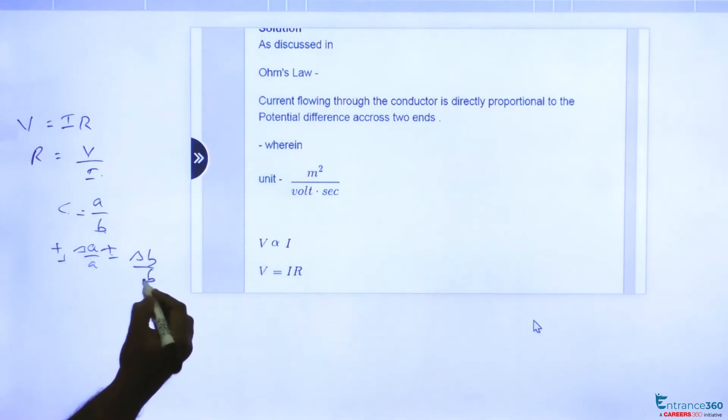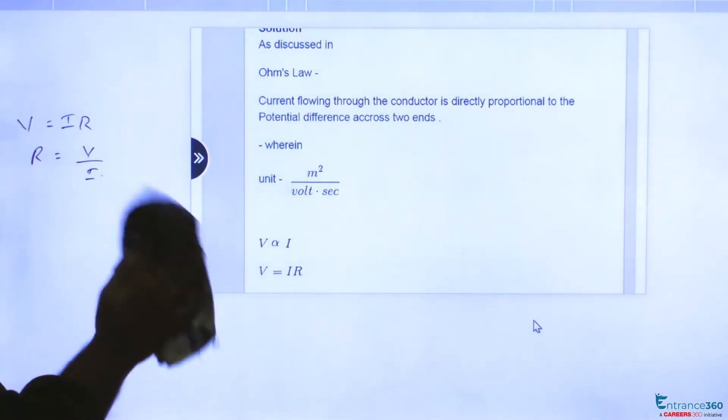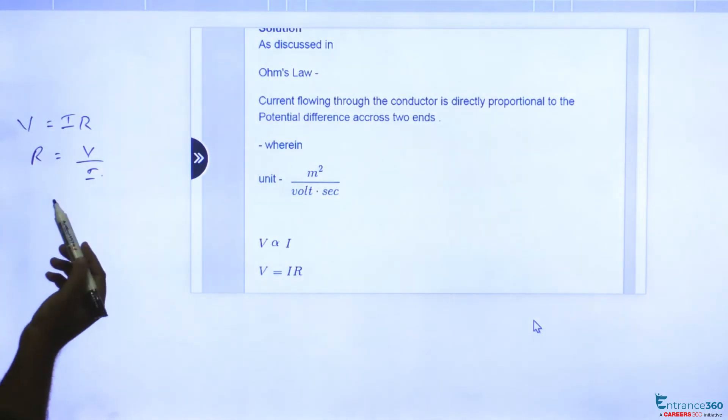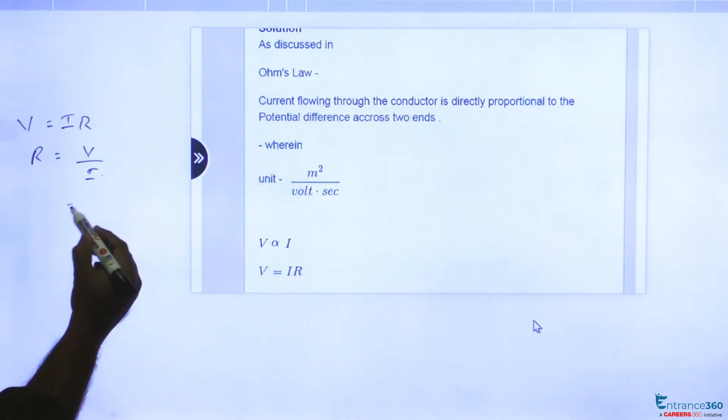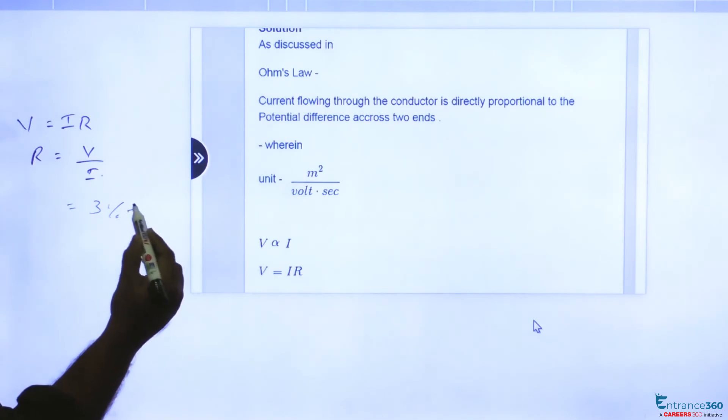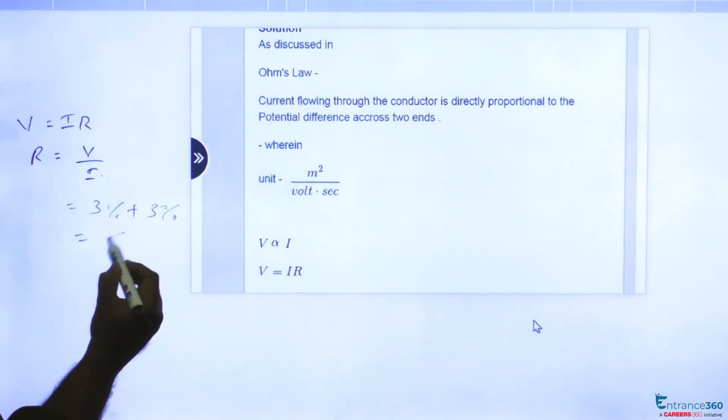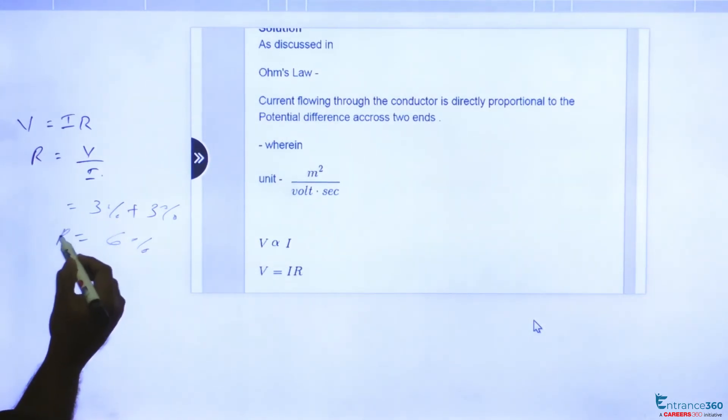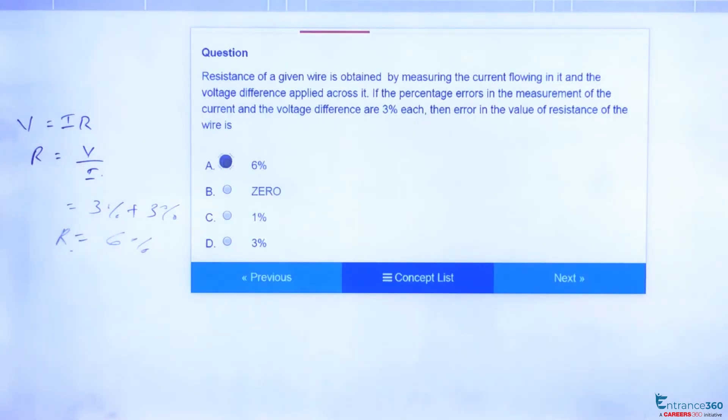The errors get added. So here, error is given as 3% for both, so we can add 3% plus another 3%, which equals 6%. This is our first option.